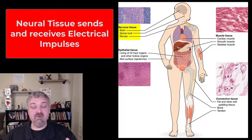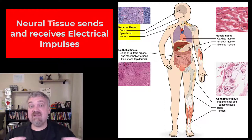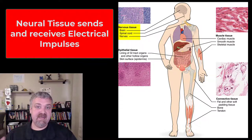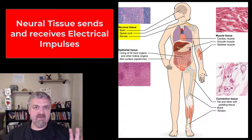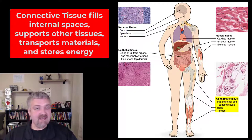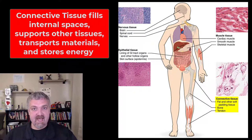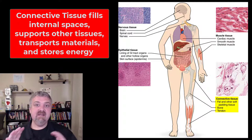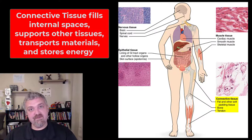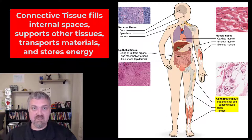Neural tissue, or nervous tissue — its job is to send and receive electrical impulses. You see the brain, spinal cord, and nerves there, and we'll cover that in great detail. So if it's not lining or covering something, it's not contracting, and it's not sending or receiving electrical impulses, then it falls into our fourth category, this catch-all called connective tissue.